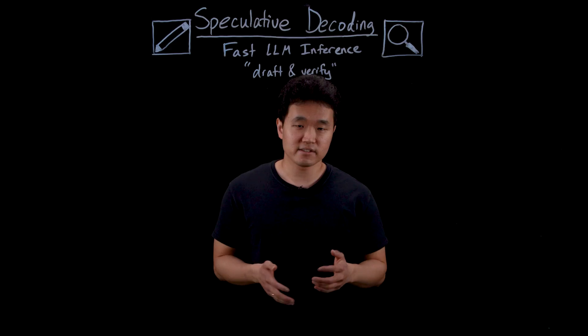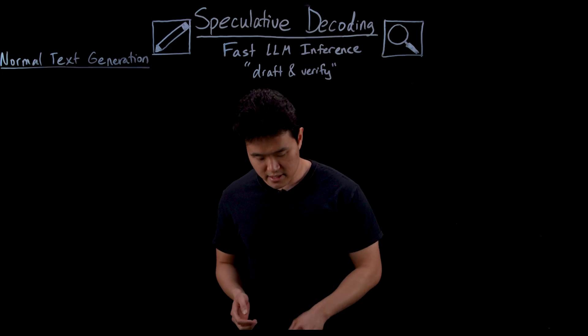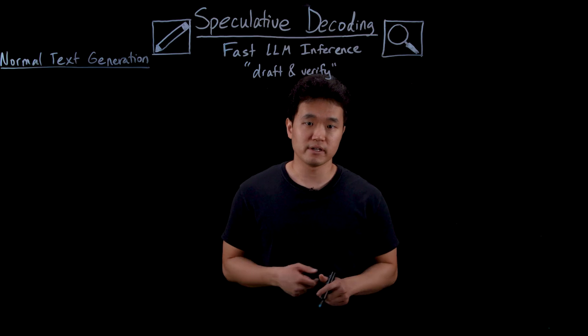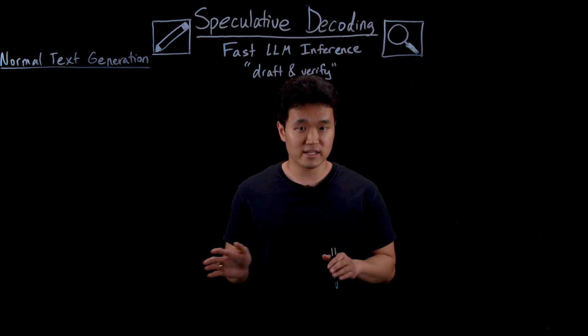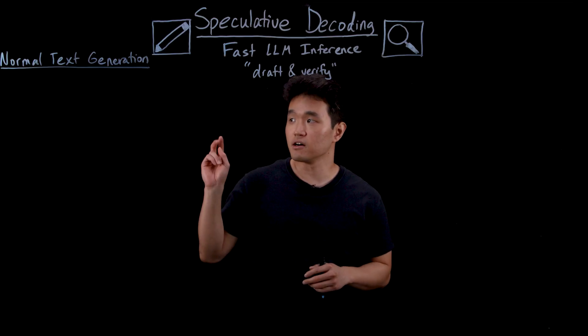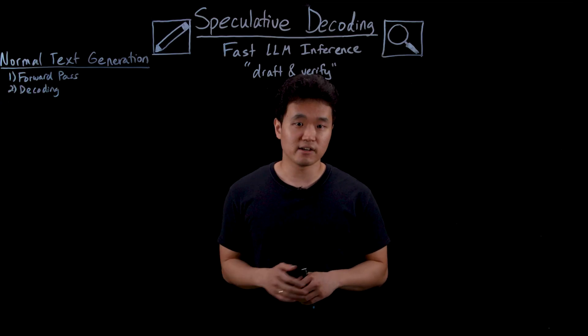Now before I dive into the details, let's quickly review how normal text generation works since speculative decoding will build on top of it. So basic vanilla LLM generation is an autoregressive process of two sequential steps: a forward pass and a decoding phase.